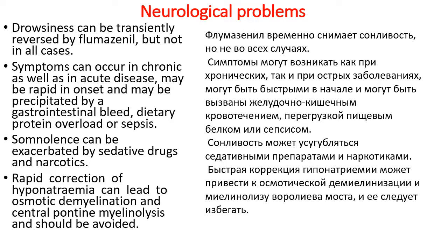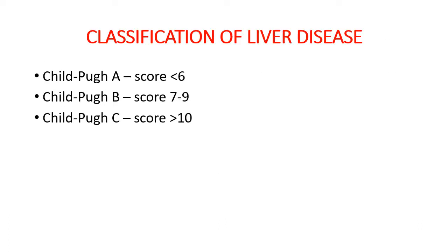Rapid correction of hyponatremia can lead to osmotic demyelination, central pontine myelinolysis, and quadriplegia. And of course, remember the classification of liver disease: Child A, B, and C.